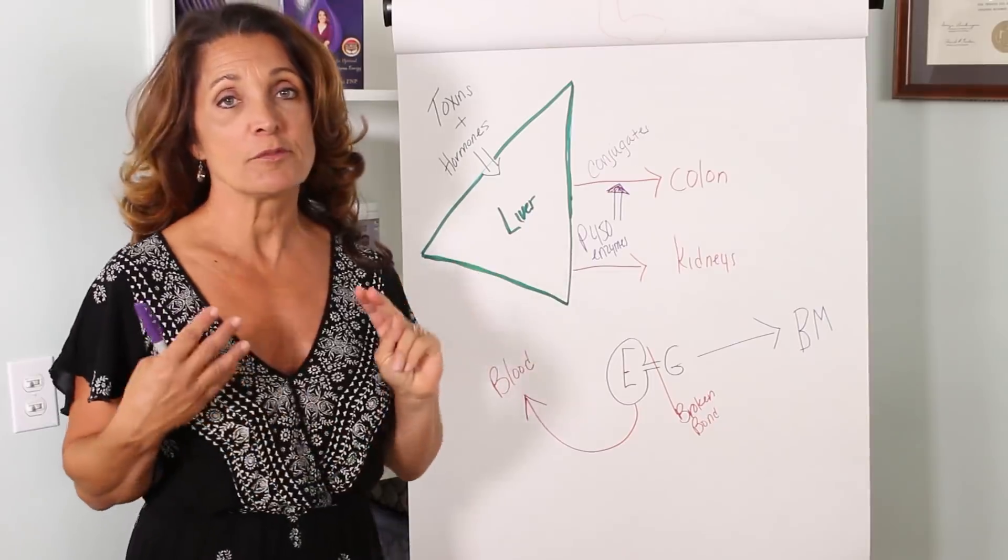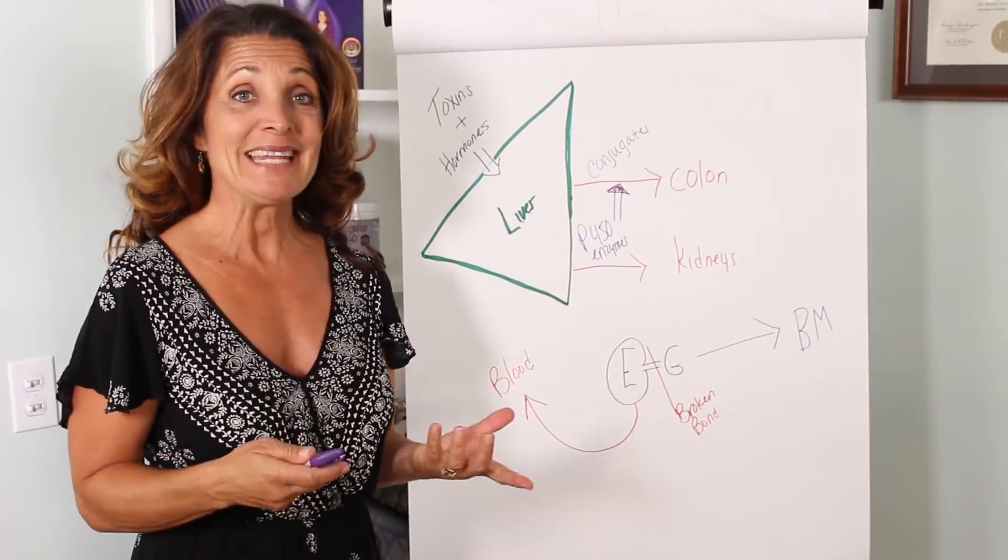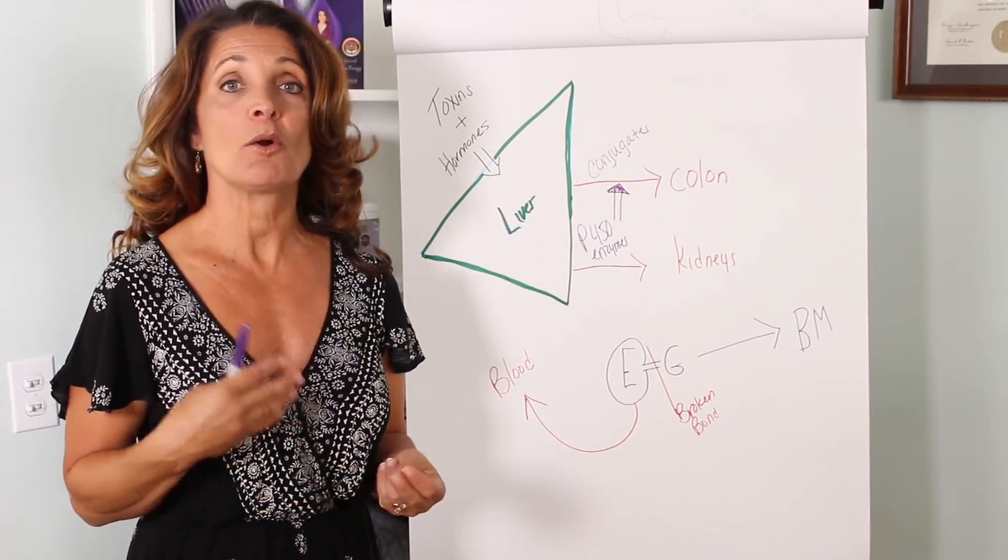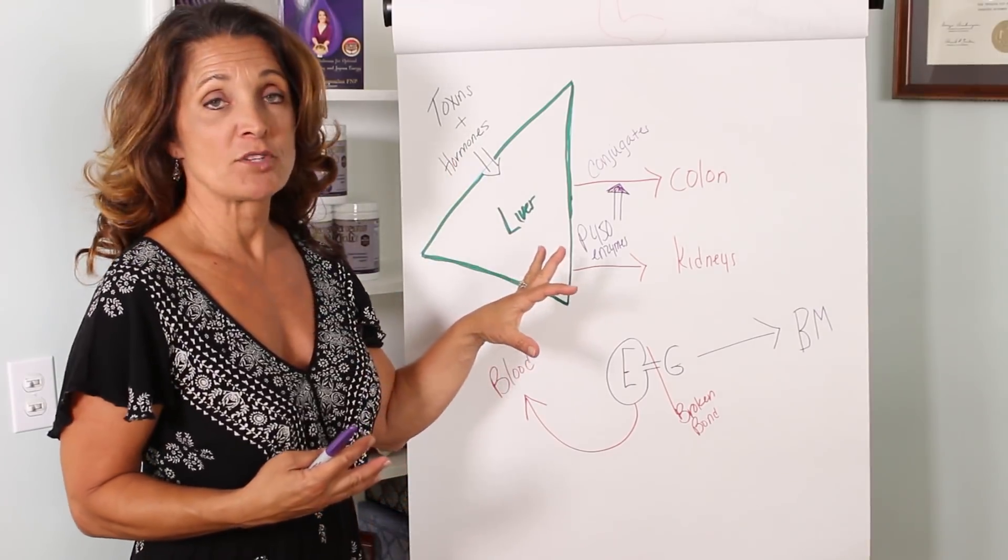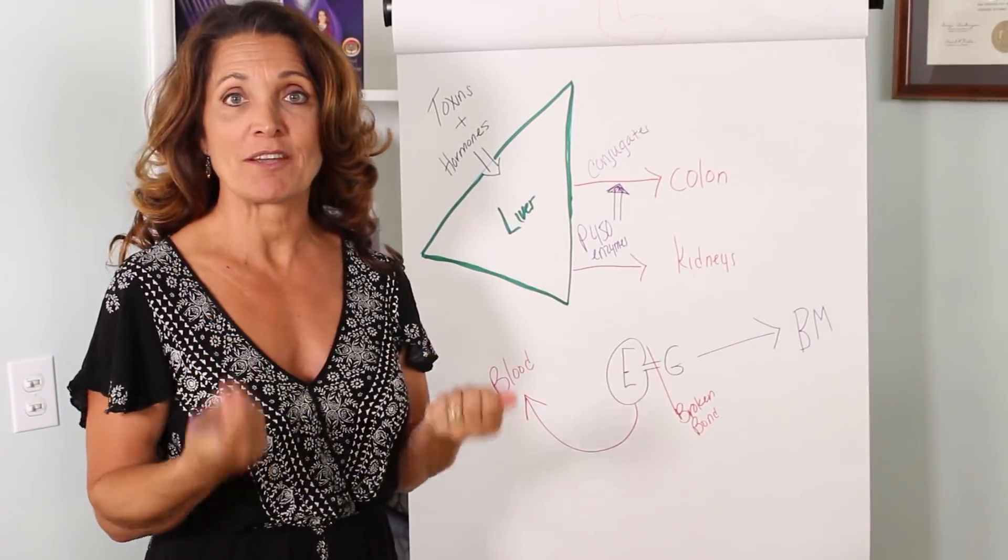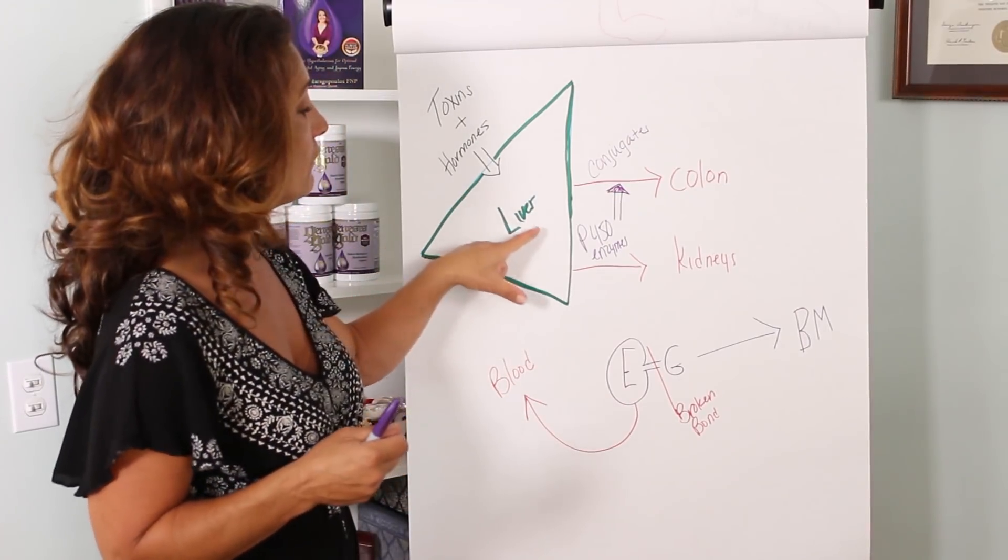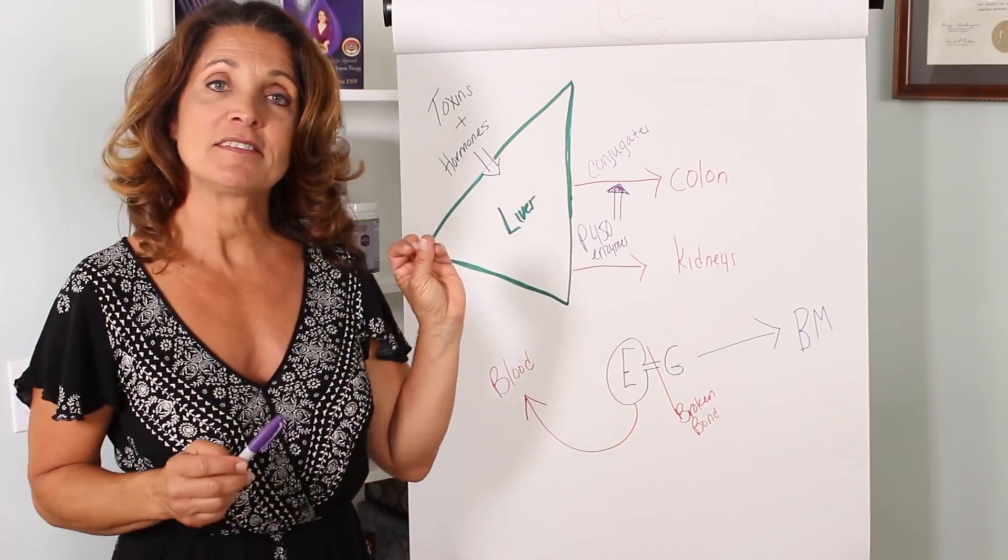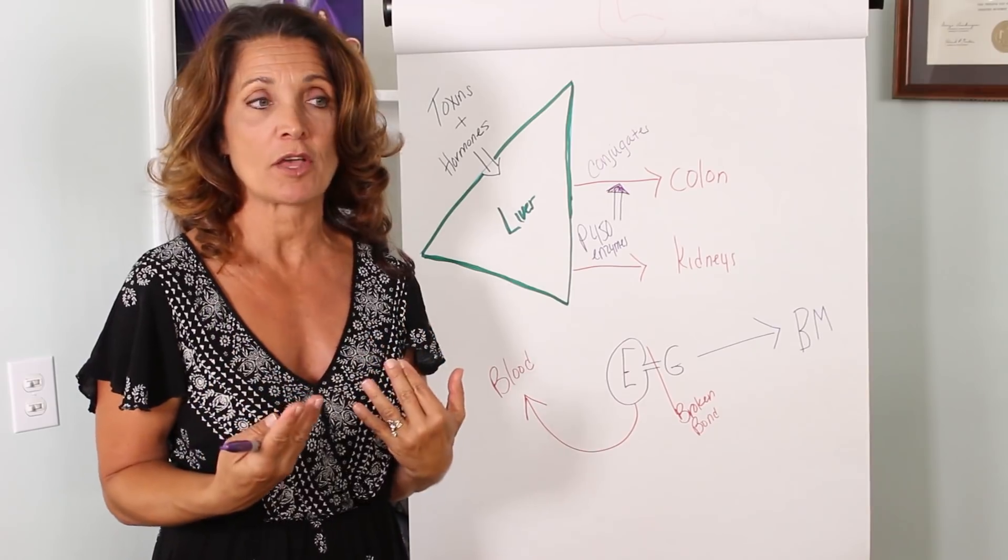All of these toxins, especially hormones, are fat soluble, meaning that they need to be broken down so that they can be water soluble. Fat soluble toxins and hormones are difficult to get rid of. Water soluble are easier. And so your liver uses enzymes called P450 enzymes that creates these water soluble compounds.